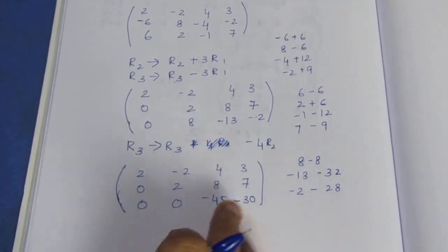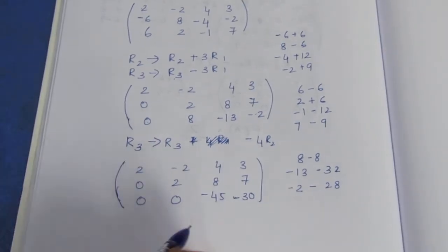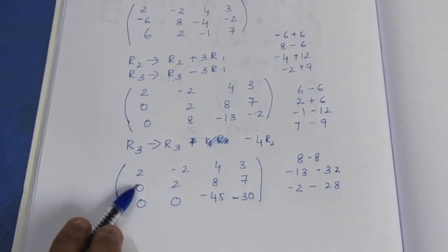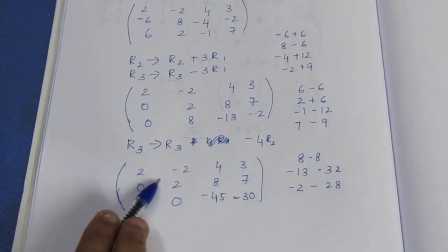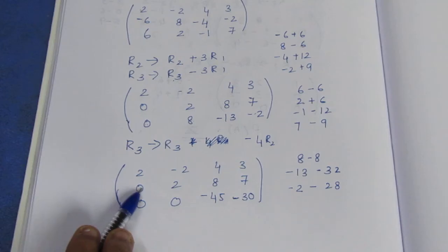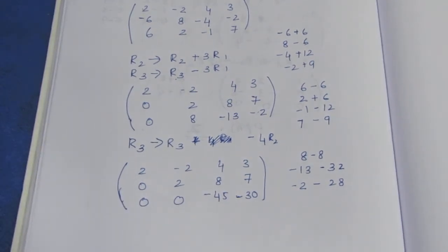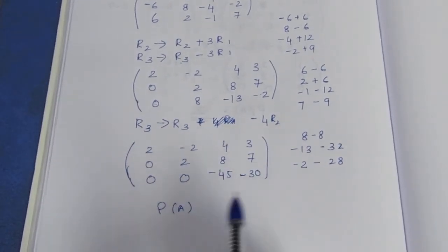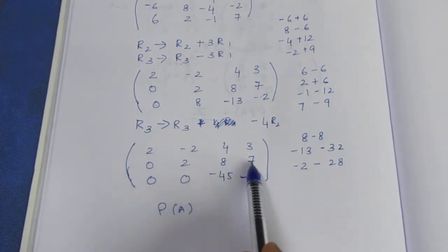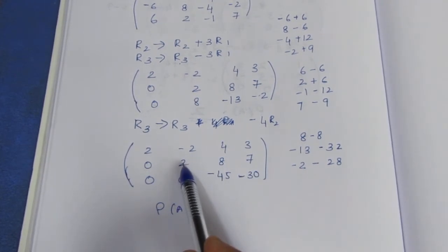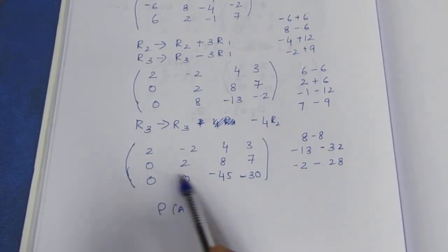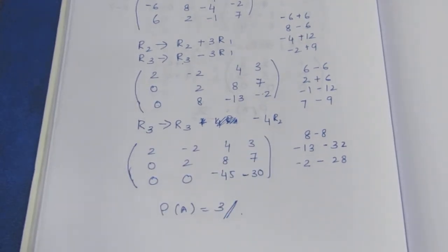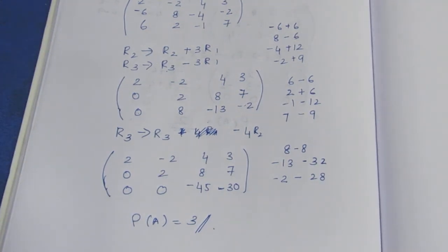Now I will change the number to 1. That's 0. We change the number to mark the rank. If you look at rank — how many non-zero rows are there? Zero is not counted. This row is non-zero, and the third row is non-zero. So this is the answer to rank. 3 is the answer. We have rank 3 for this sum.